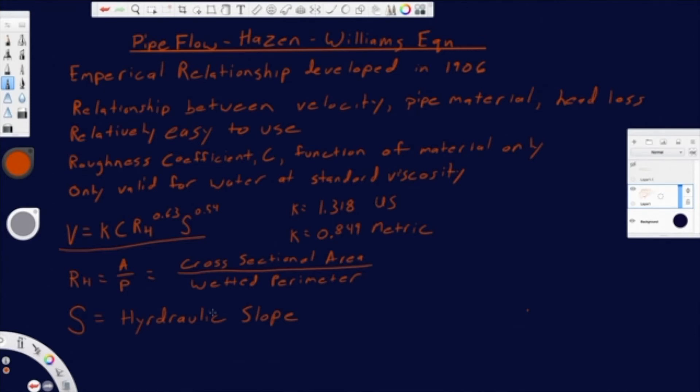And all these numbers, again, it's empirical. These don't have any real theoretical meaning. They're just basically fitting the slope. And how you fit that slope is going to depend on which kind of unit you're using. Feet for US or meters for metric.